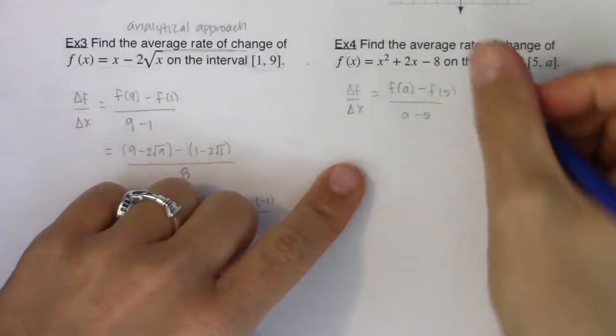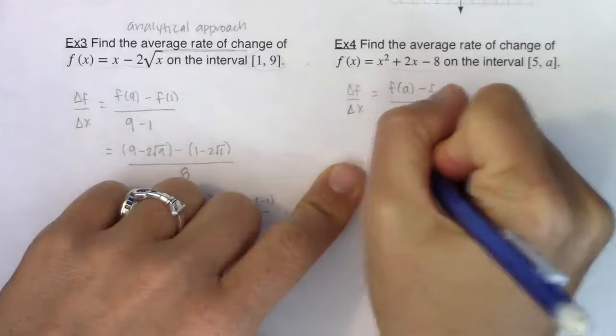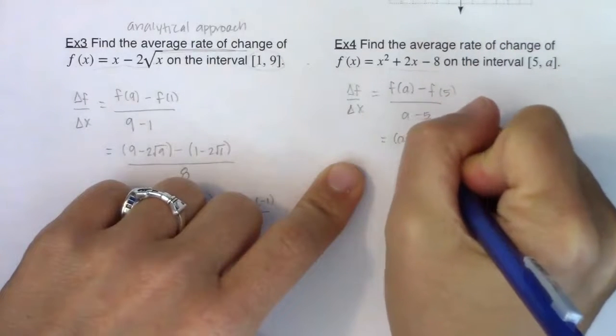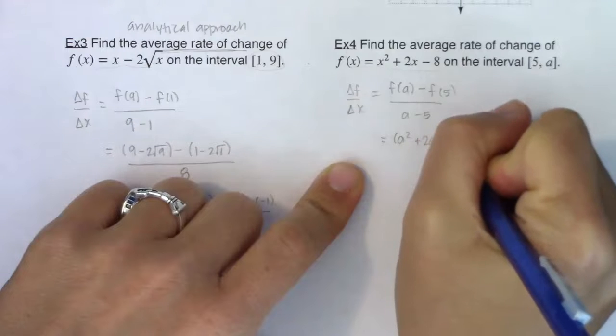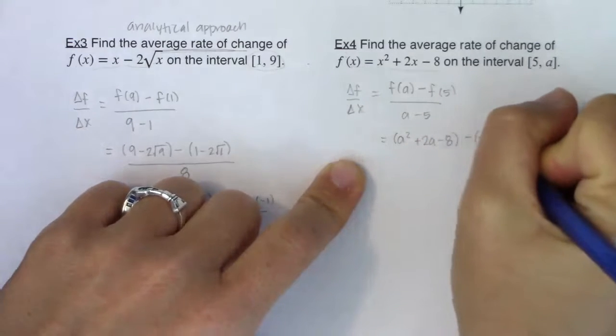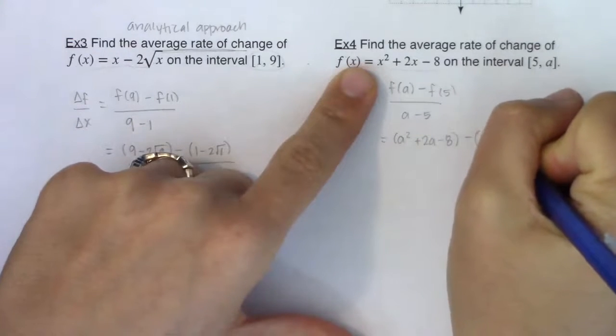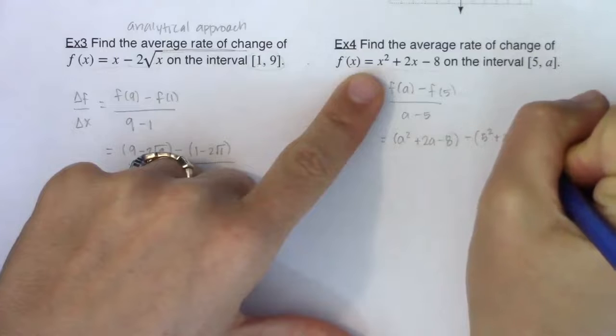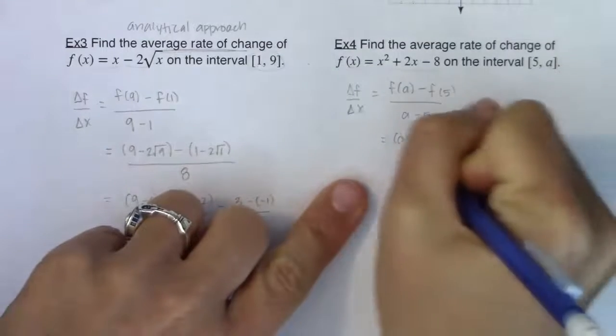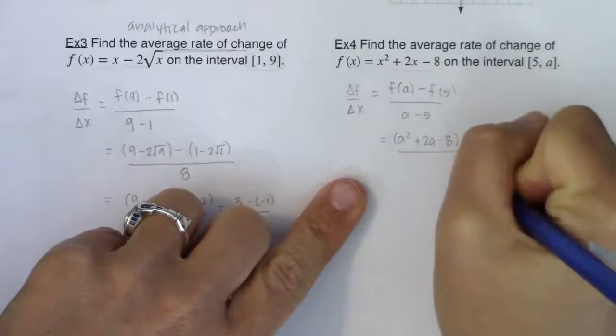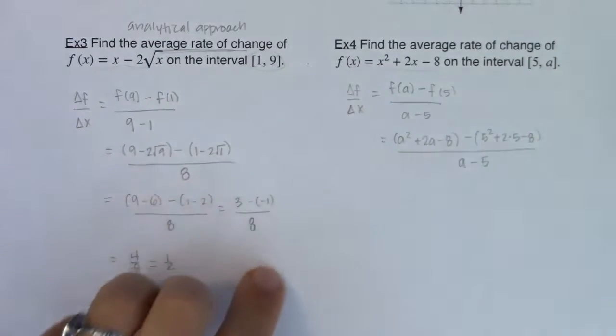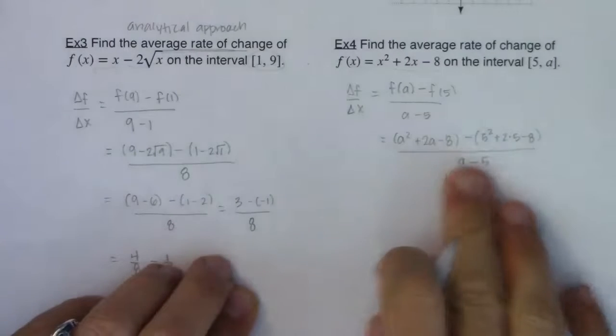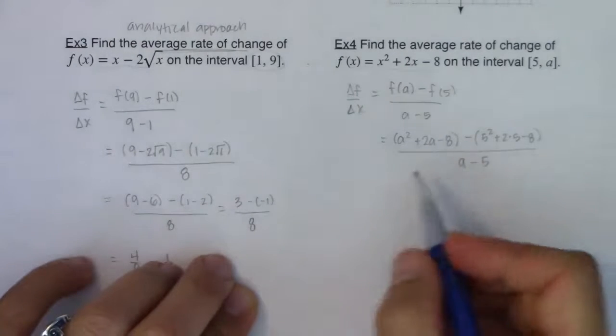So let's see what we'll have here. All right, if I was going to plug A in, I would have A squared plus 2A minus 8 minus, we would do 5 squared plus 2 times 5 minus 8. And the denominator, I'm just going to leave it as A minus 5. I can't really do anything with that. That's a linear factor, so that's staying put.